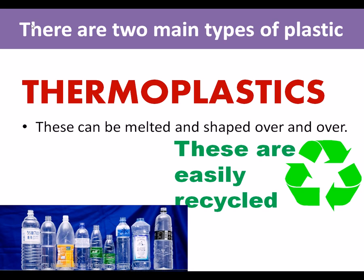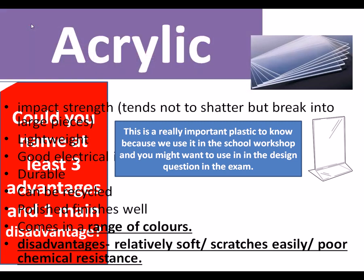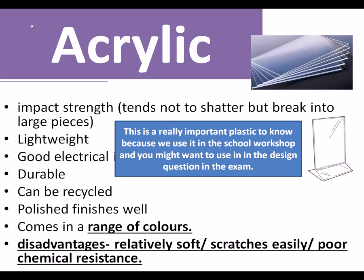Now we're going to look at some thermoplastics — these can be melted and shaped over and over and are much more easily recycled. This plastic is an important one because you're going to use it in school. It is acrylic. It has good impact strength, it's lightweight, it can be polished, and it comes in a range of colors. It's an important one because you've probably used it and it comes up in the exam a lot. Acrylic is, of course, a thermoplastic.